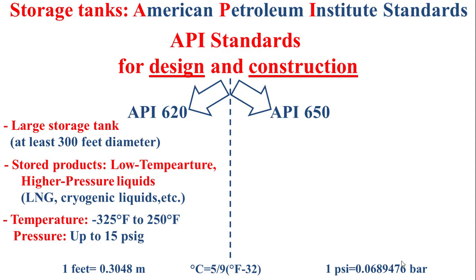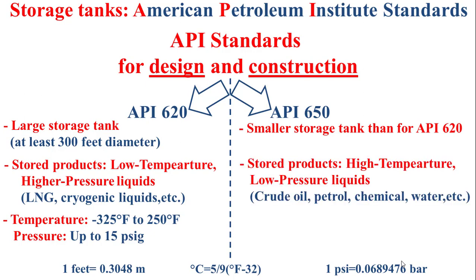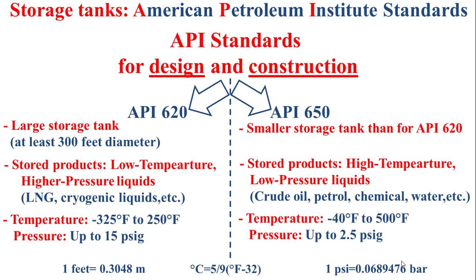For the API 650 standard, it is generally for smaller storage tanks than API 620, and the stored products are high-temperature, low-pressure liquids such as crude oil, petrol, chemical products, and water. The operating temperature is between minus 40°F to 500°F, and the operating pressure is up to 2.5 pounds per square inch gauge.